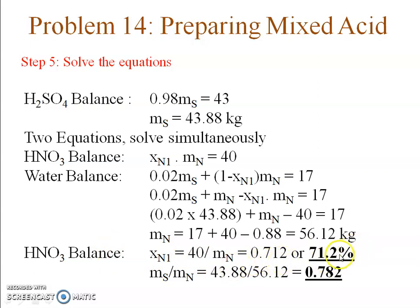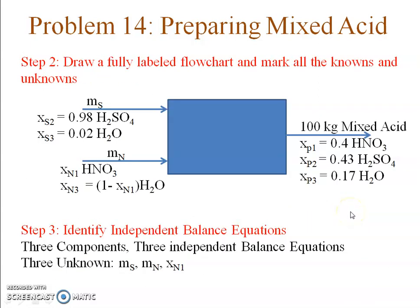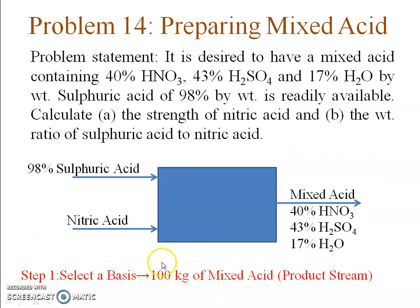Solving the remaining two equations simultaneously gives mn = 56.12 kg and xn1 = 0.712, meaning the nitric acid strength is 71.2% — the rest being water. The ratio of sulfuric acid to nitric acid is 0.782. For any problem: identify which stream to take as the basis, identify the units (kg, kg/hr, moles), and choose the stream whose composition is fully known.